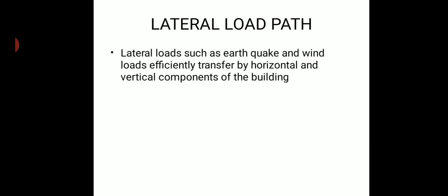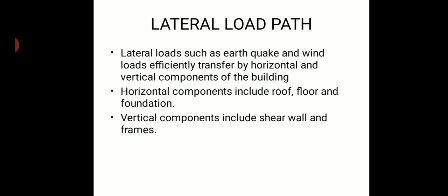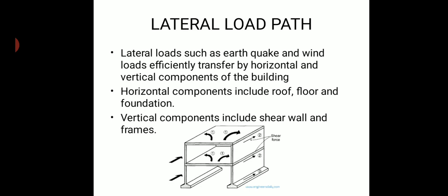Coming on to the next type of load path — the lateral load path. In this type, the lateral loads, which are also called as earthquake loads and wind loads, are transferred efficiently through the building. The components of the lateral load path are vertical components and horizontal components. The horizontal components include roof, floors, and foundations. From the horizontal component marked as 1, the load is transferred to the vertical component marked as 2, which is the shear wall and the frame.